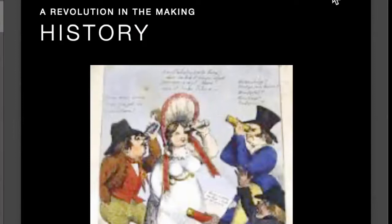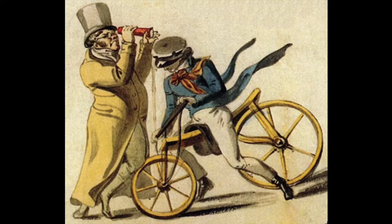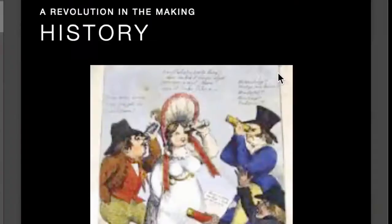Everyone was walking around looking through their kaleidoscopes. There are even etchings of people trying to cross roads while looking through a kaleidoscope, nearly being driven over by a horse and carriage, and a guy riding his bicycle into a wall. In some of his letters to his wife, Brewster writes about what a craze it was, and his wife wrote back saying they'd run out of kaleidoscopes. Within the first month, he had sold over 120,000 units.